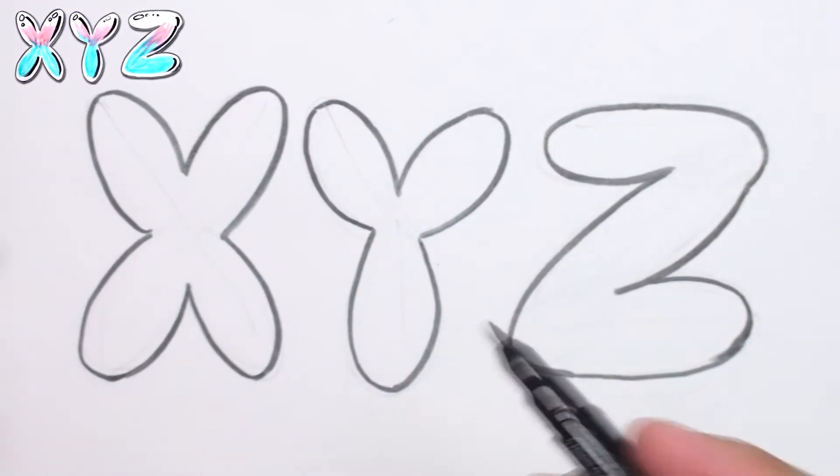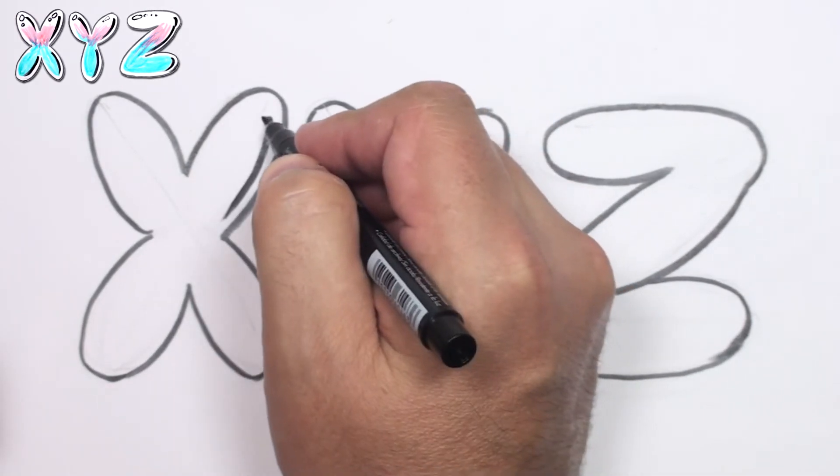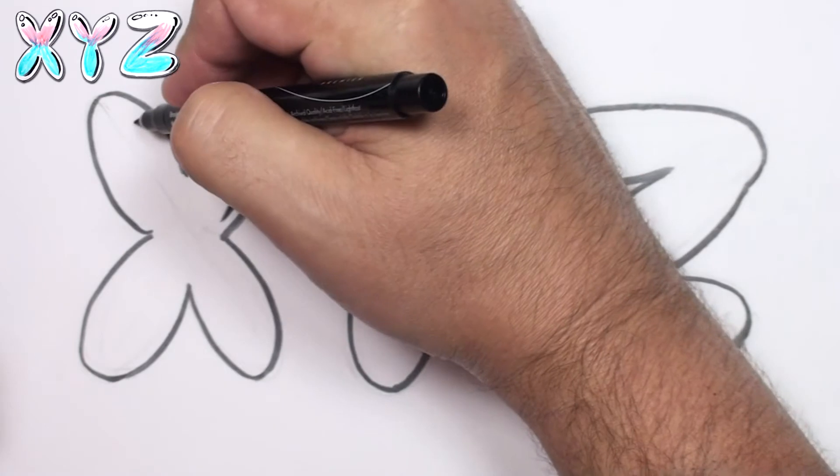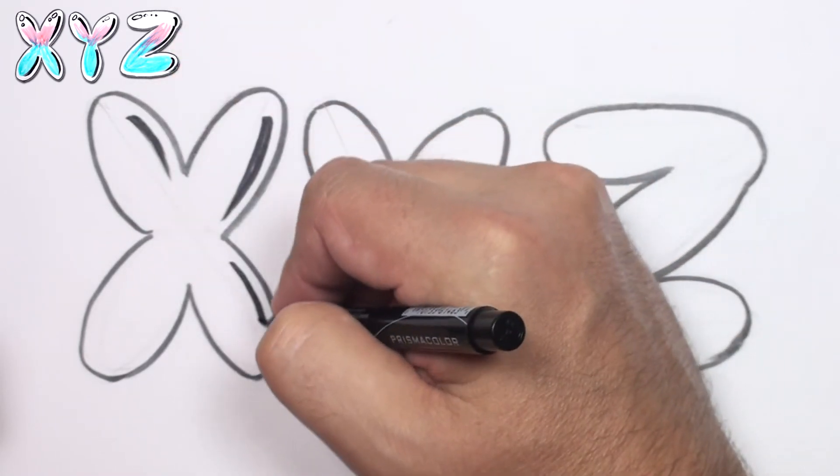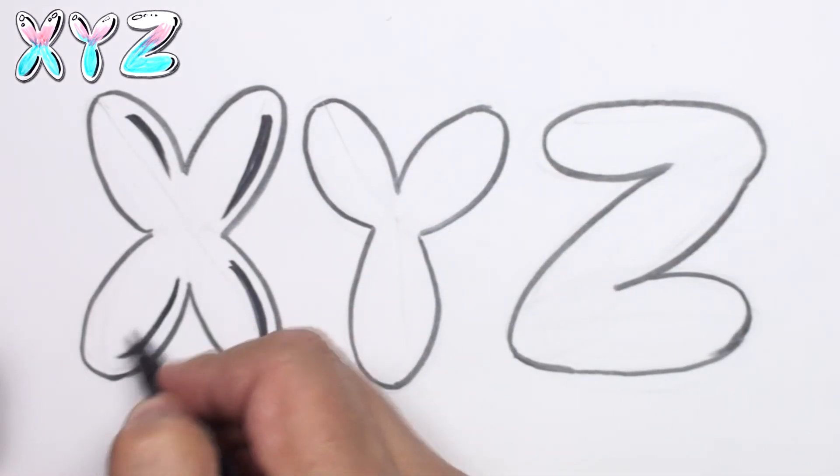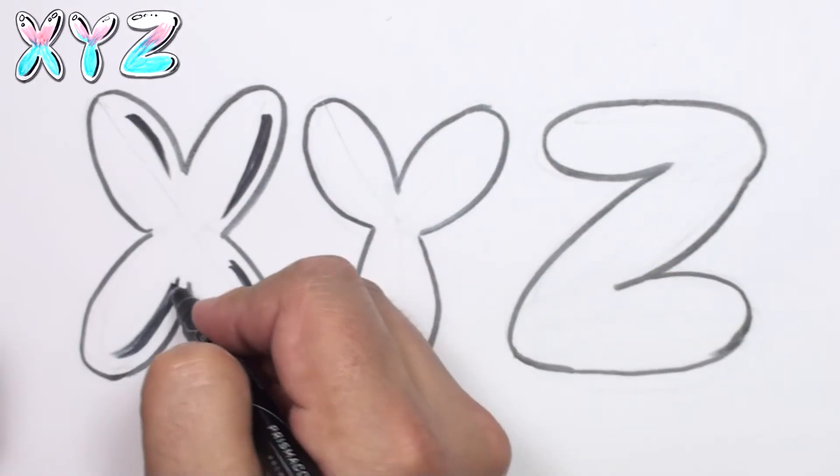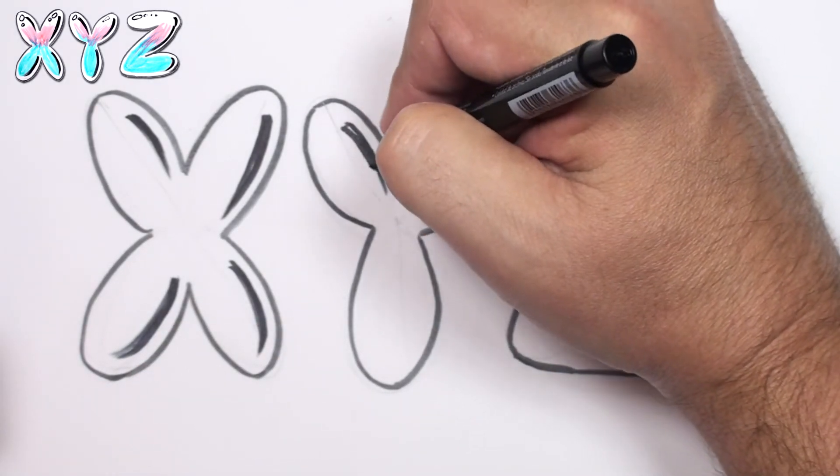All right, I'll come back in and put our little accent here. This could be a reflection. It's black, so it's not really a highlight.